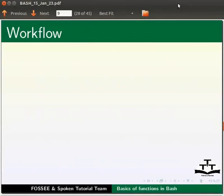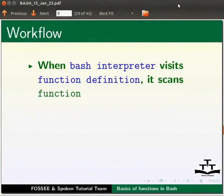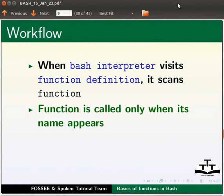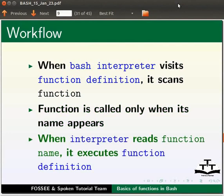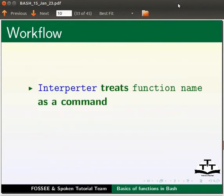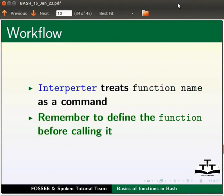Let us understand the workflow. When the Bash interpreter visits the function definition, it simply scans the function. The function is called only when its name appears within the script. When the interpreter reads the function name, it executes the function definition. The interpreter treats the function name as a command. Please remember that we have to define the function before calling it.